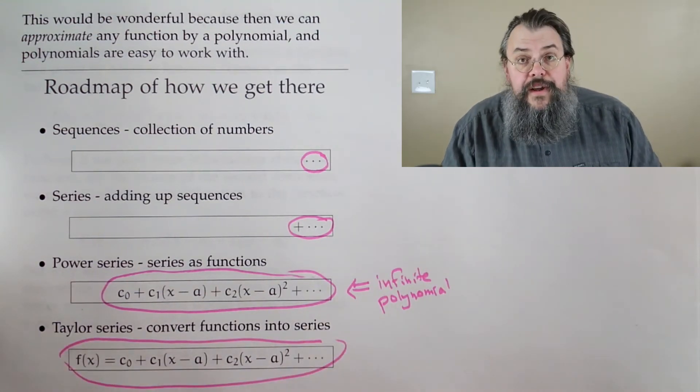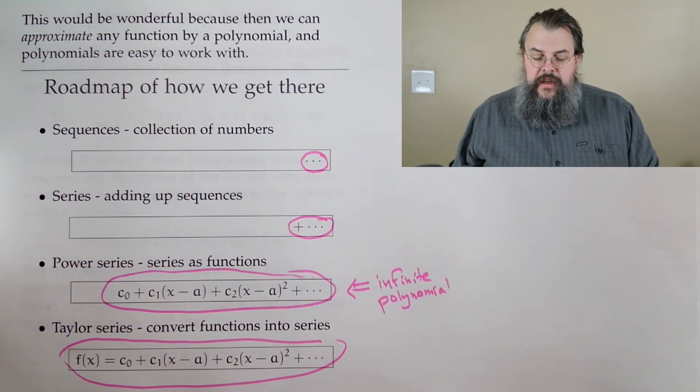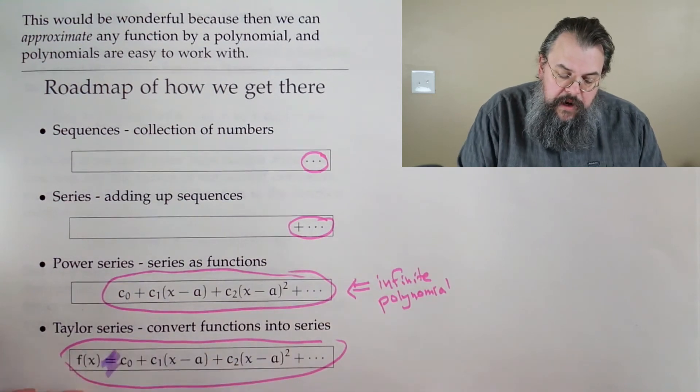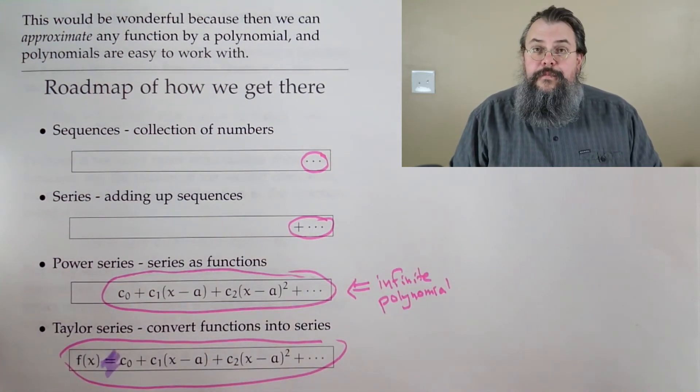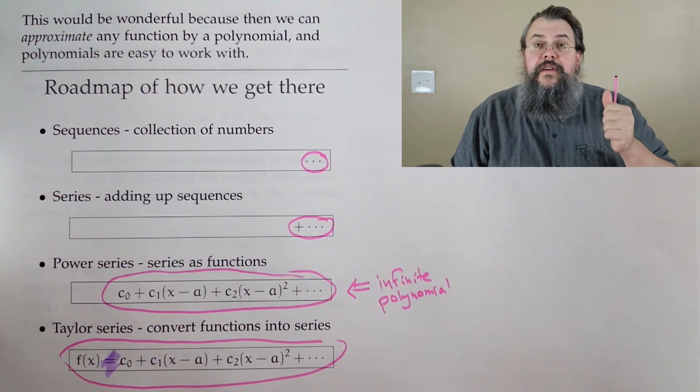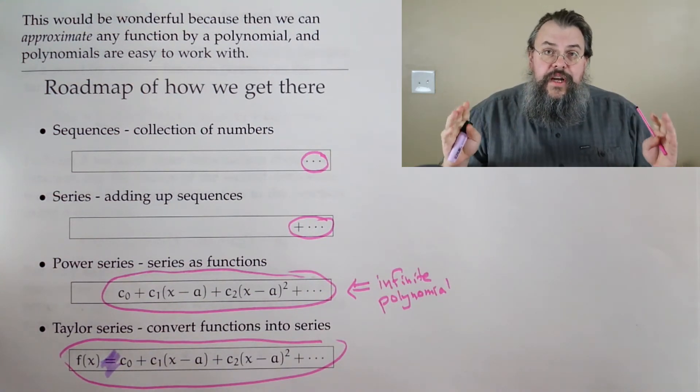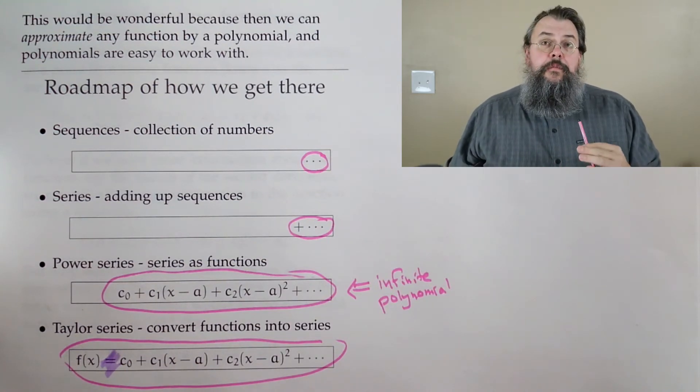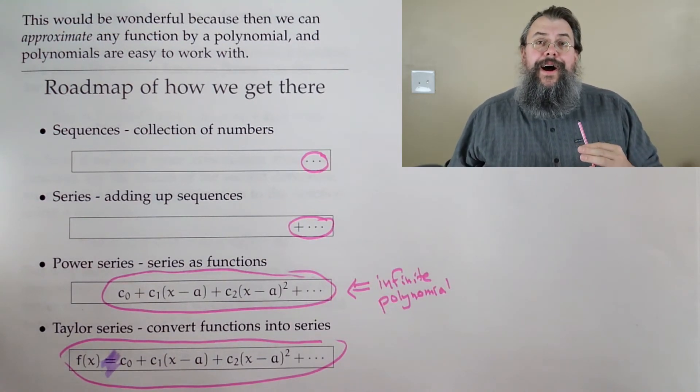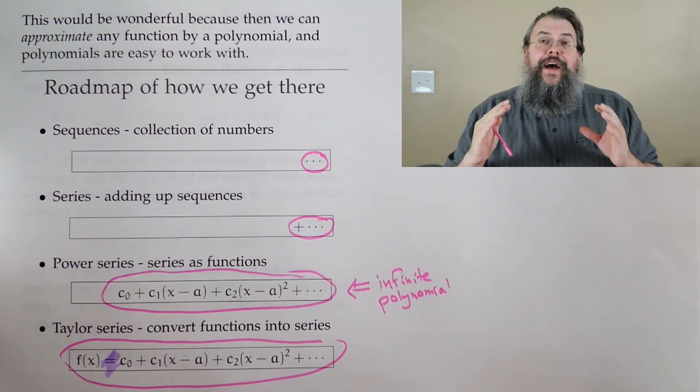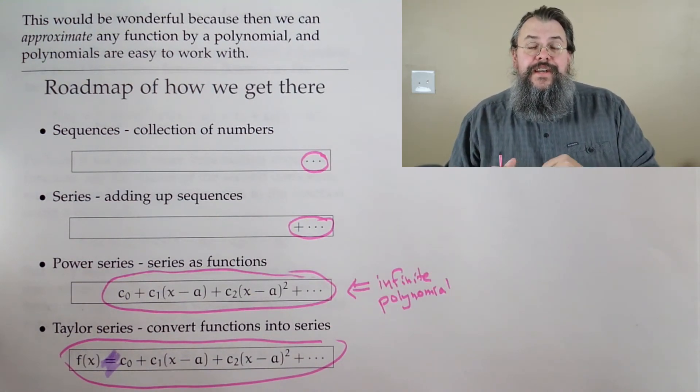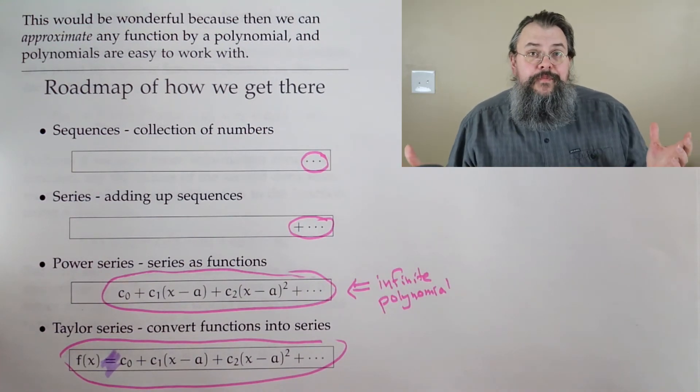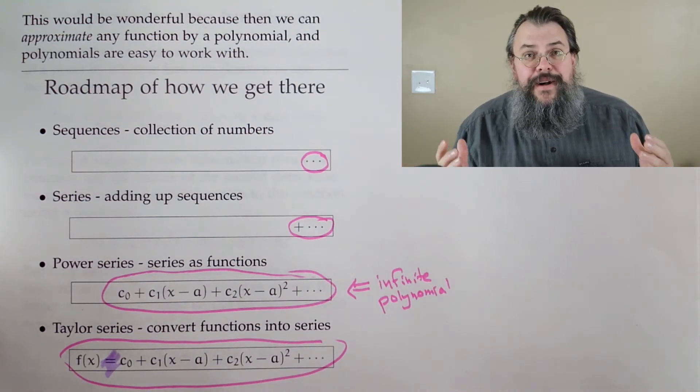And you'll notice something very important here. It says what? Well, my function is not just approximately some polynomial, but it's exactly some polynomial. Now, there are restrictions for some restricted choice of x, but we say, wow, this is beautiful. We now have a way to think of our function as polynomials. And you might be thinking, well, okay, that's great. But what's so special about polynomials?